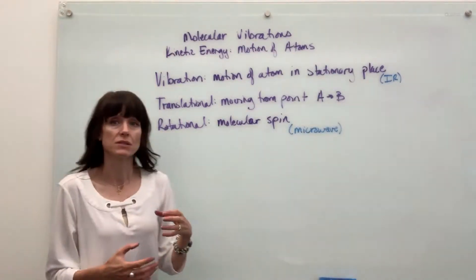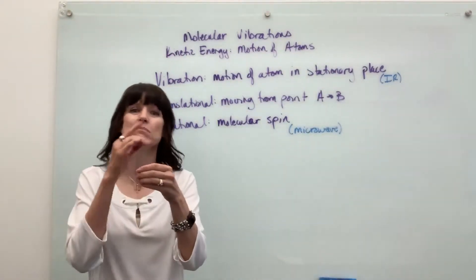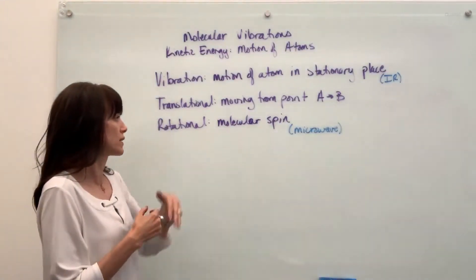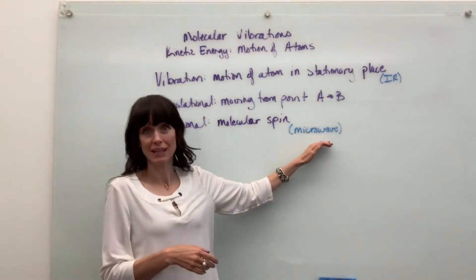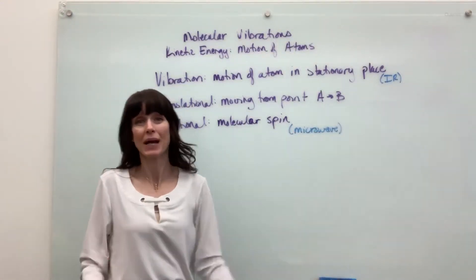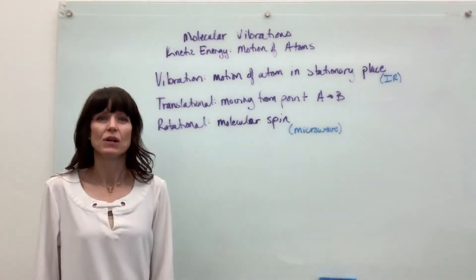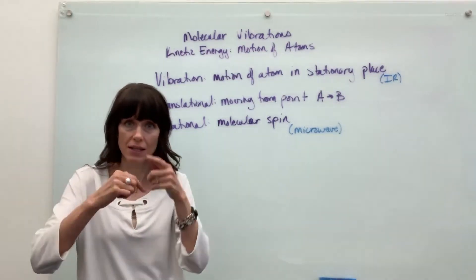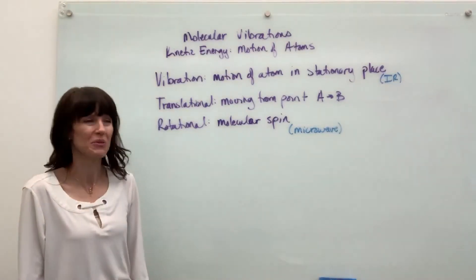Next, rotational. So this is the atom spinning in some way in place. Molecular spin. This really impacts you and I. That's the microwave oven. So when we use the microwave oven, the atoms will spin in place and it cooks our food.